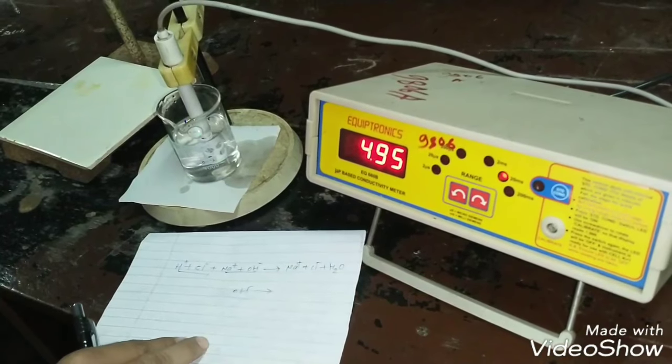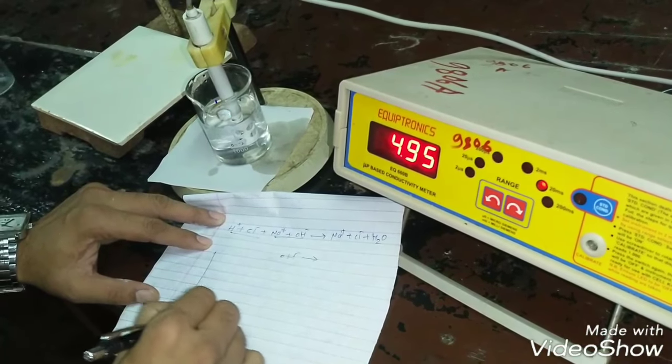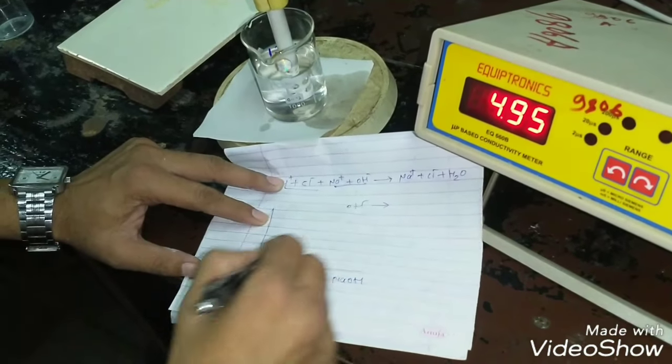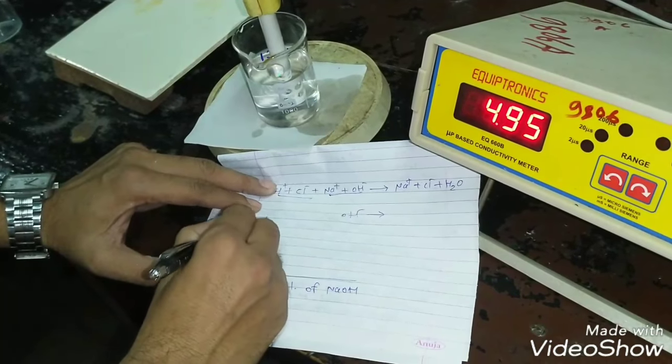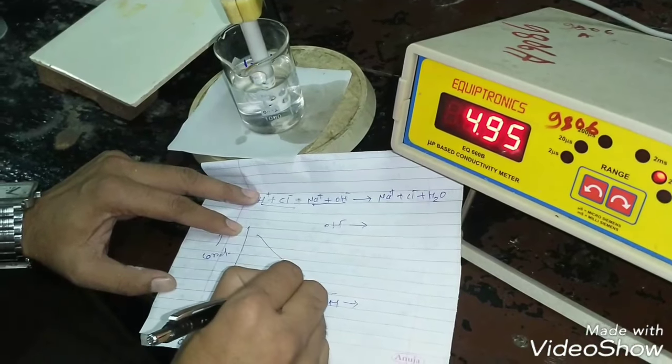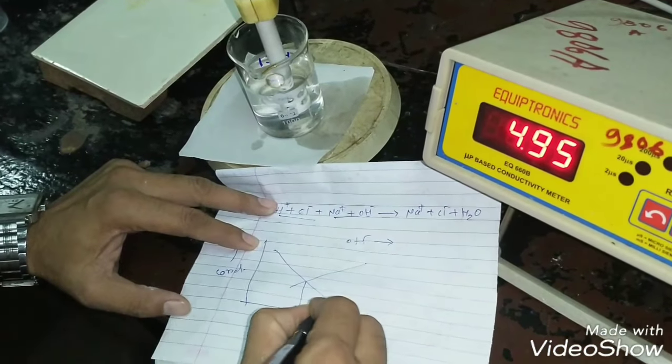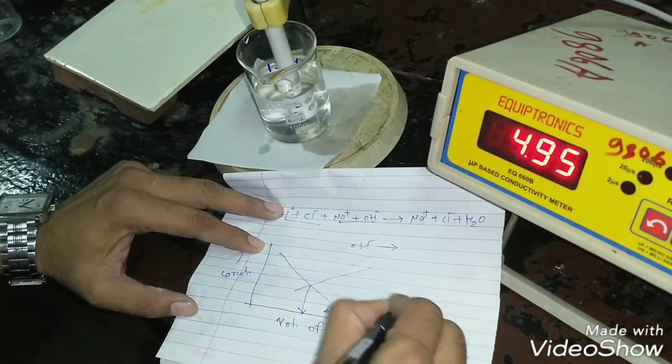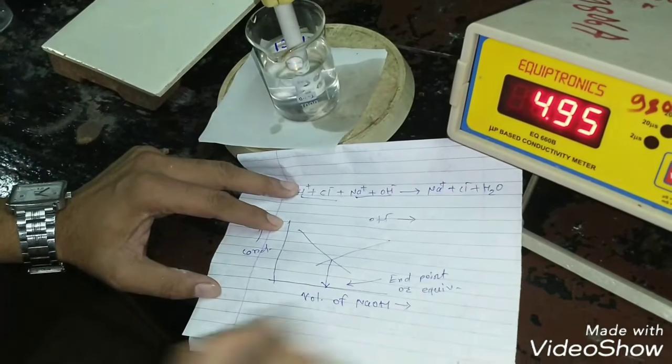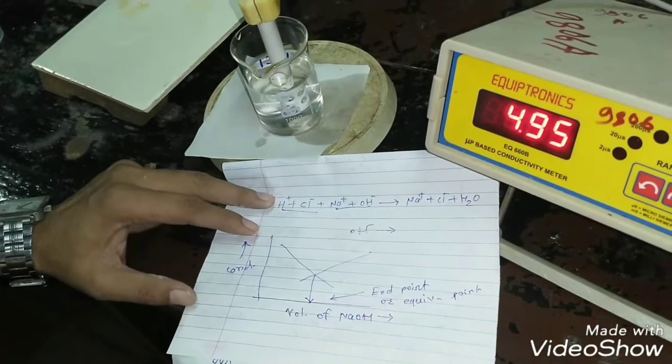After completion of titration, if we plot the graph between conductivity versus volume of NaOH added, the nature of graph should be the two intersecting lines like this. And from the point of intersection, we get the end point or equivalence point of the titration. In this way, one can find out the end point of titration by conductance measurement of the solution.